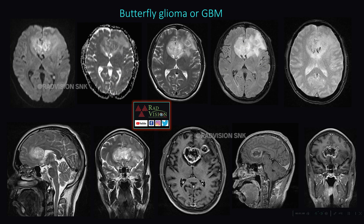Another type of glioblastoma multiforme commonly encountered is butterfly glioma GBM. Here the lesion is noted in the genu of the corpus callosum extending along the corpus callosum into the frontal lobes in a butterfly fashion, showing patchy restricted diffusion on DWI, hyperintense on T2 and FLAIR, with focal blooming on GRE suggestive of hemorrhage. On IV contrast, there is typically peripheral thick irregular rind enhancement with central necrosis — a case of butterfly glioma.